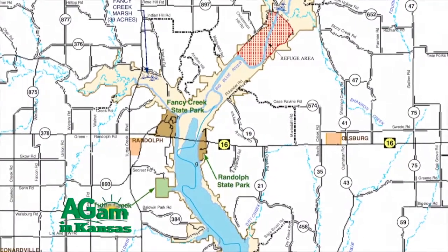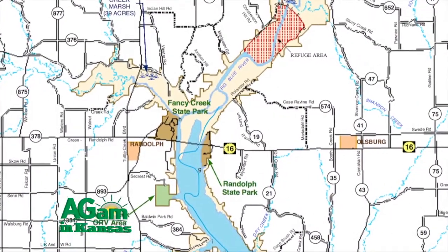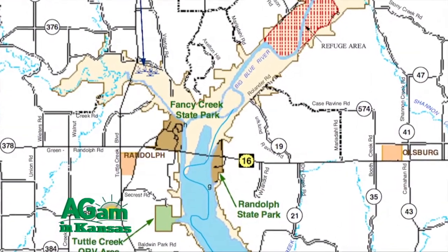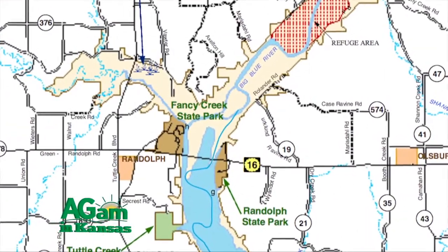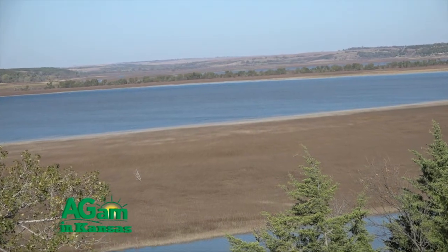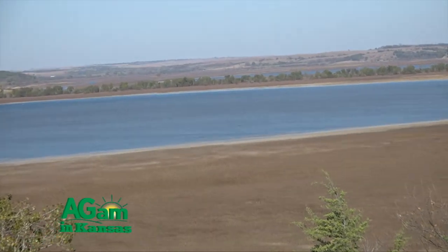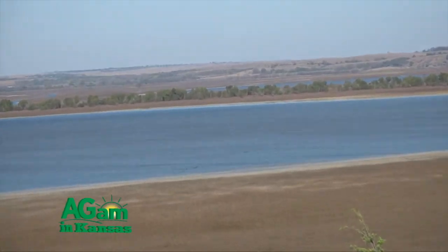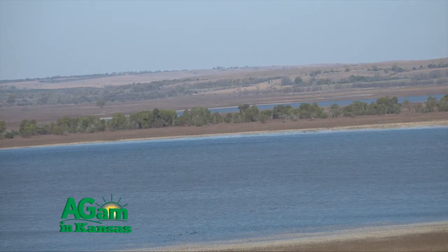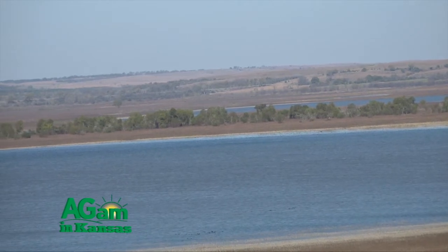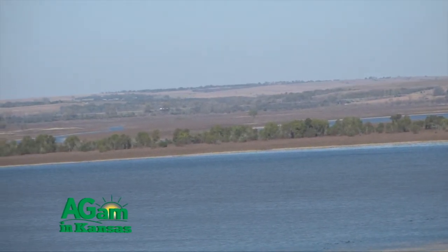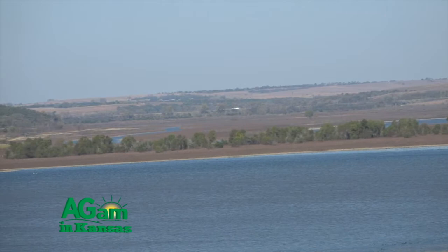This is where Fancy Creek and the Blue River come in from the north, and as the water starts to slow down, a lot of that sediment suspended in the water is dropped out and accumulates here — so you see more evidently the issues that we are and will be dealing with.